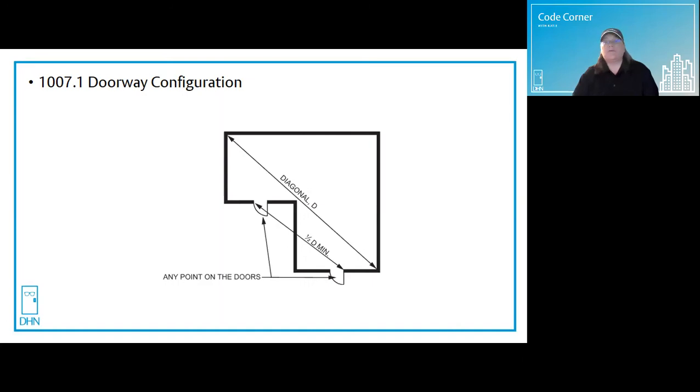Being an exceptional code, like the IBC, it allows the separation to be reduced to one-third the diagonal when the building is fully sprinklered.